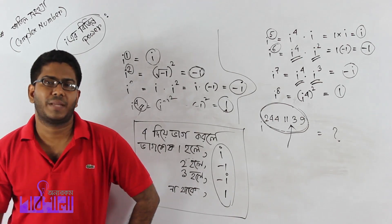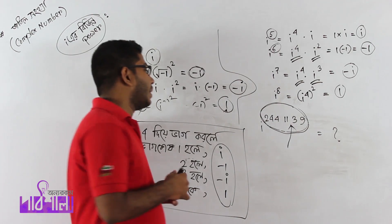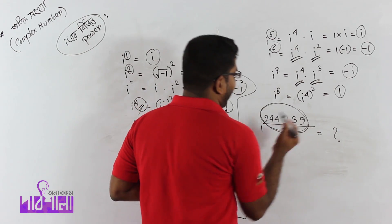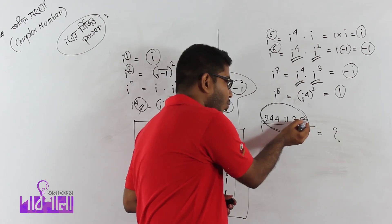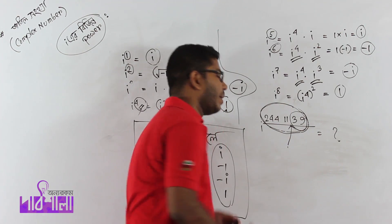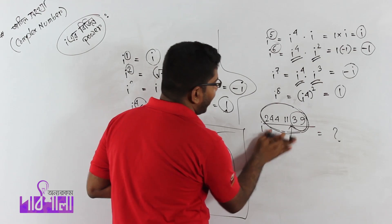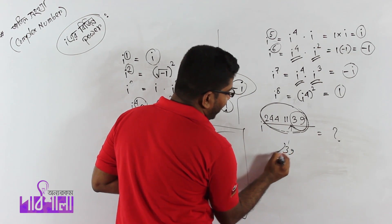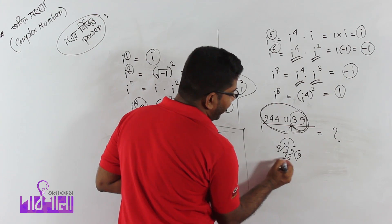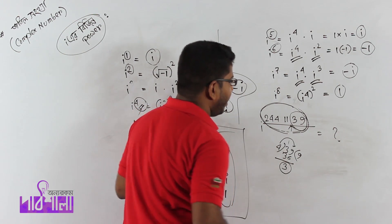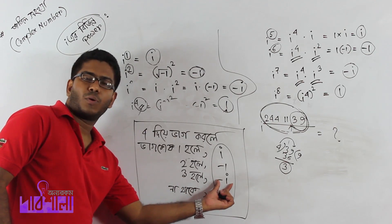2, 3, 4, 5, 6, 7, 8, 9. The last thing is 39. 39 divided by 4 gives remainder 3. Ultimately, the value is 3.